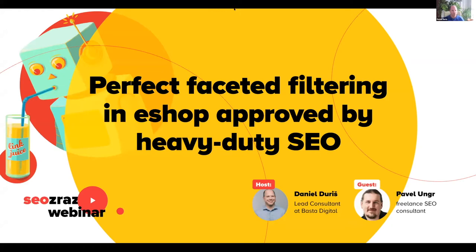Hello everyone, this is another session of SEOs RAS. Again this year we are doing it virtually. SEOs RAS is a conference with various SEO topics. Today our guest is Pavel Unger from Czechia, a freelance SEO consultant. He's going to talk about eShops and how to do faceted navigation or faceted filtering properly, optimize it technically, generate content for categories, and address crawl budget and indexing of multiple categories and duplicate content.